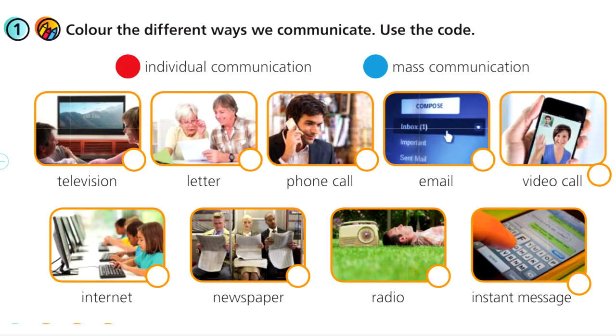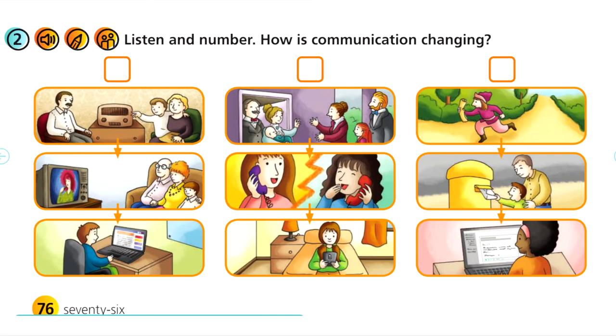Color the different ways we communicate. Use the code. Individual communication. Mass communication. Television. Letter. Phone call. Email. Video call. Internet. Newspaper. Radio. Instant message.